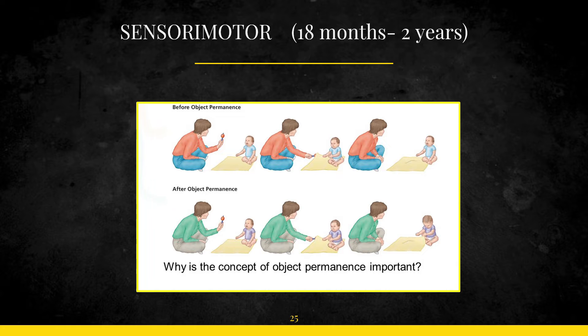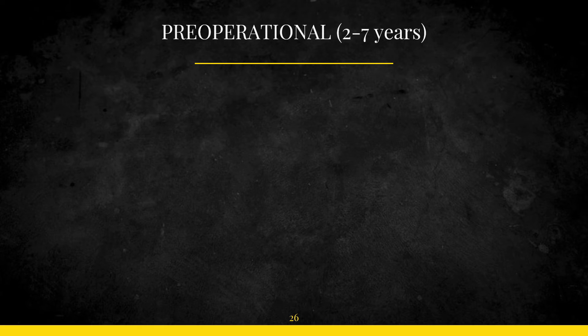Now object permanence also teaches this child something known as existence of their own. When the child learns that the objects are separate from them, they have an existence of their own, they are able to attach names and words to certain objects. So that is the sensory motor period which is from 18 months to 2 years of age.